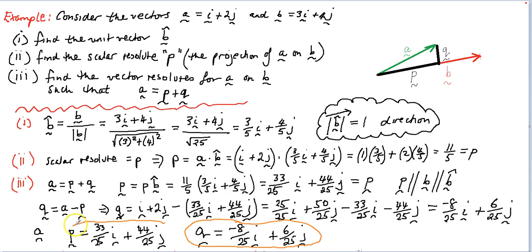And I'll put them on the diagram too, so you can see that P, the vector P is equal to 33 on 25 I plus 44 on 25 J. And the vector Q is equal to negative 8 25ths I plus 6 25ths J. I'll just make my 8 look a bit more like an 8.